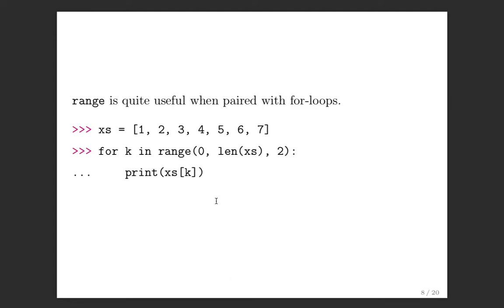Range is quite useful when paired with for loops. If I have a list [1, 2, 3, 4, 5, 6, 7] and I say 'for k in range(0, len(list), 2): print xs[k]', it's going to print 1, 3, 5. This is how you simulate C or Java-style looping in Python.